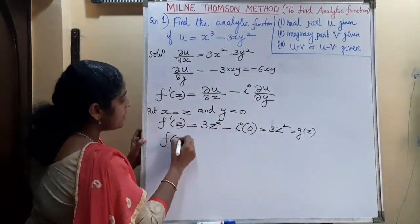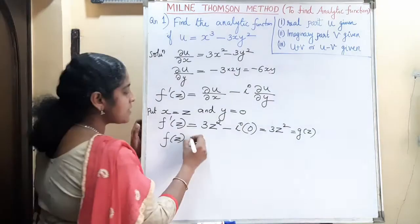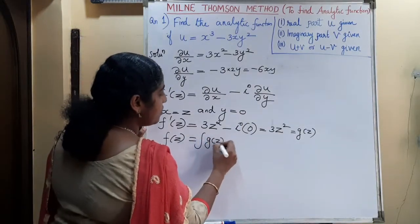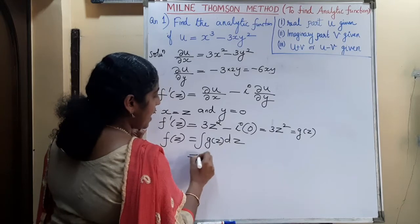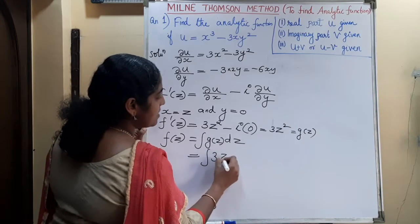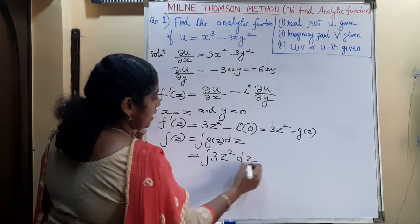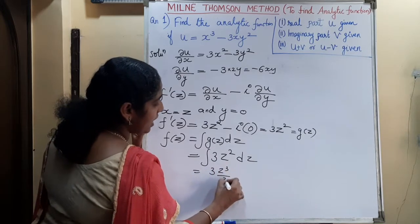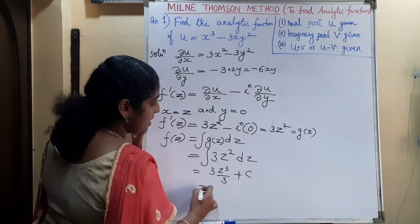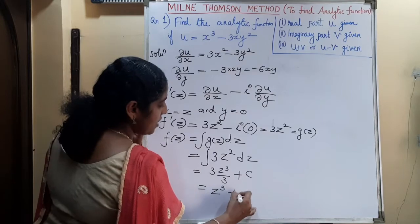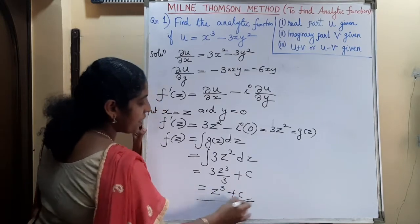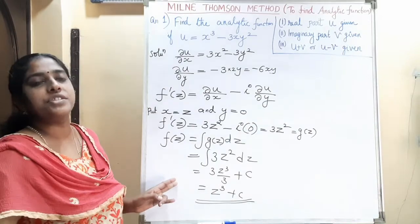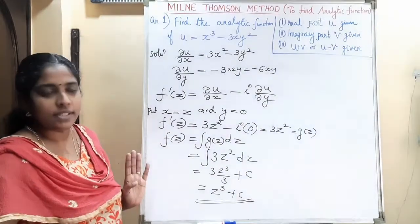F(z) = ∫G(z) dz = ∫3Z² dz = 3·Z³/3 + C = Z³ + C. So if the real part is given, we can determine the analytic function using the Milne-Thompson method.